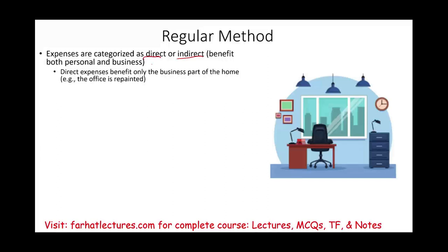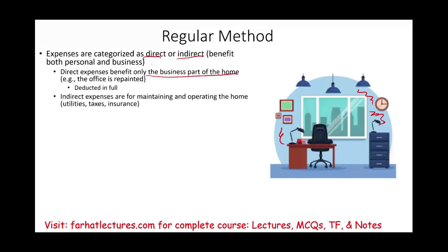Direct expenses — only for the part of the home designated as the office — are deducted in full. For example, painting the office walls or replacing the carpet specifically for that office. Certain expenses like utilities, taxes, and insurance cannot be broken down between personal and business — you pay insurance and taxes for the whole home — so you allocate between business and personal based on an allocation base.